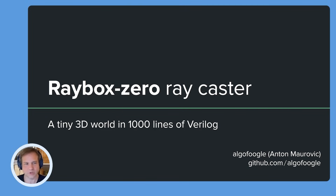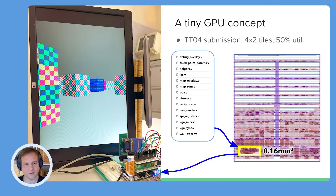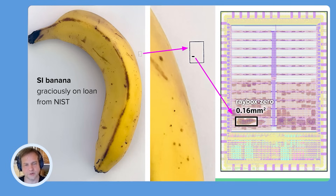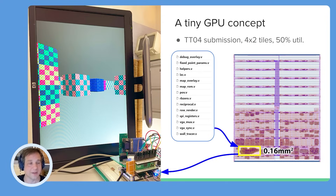I've got to give a talk on my design Raybox Zero, which is one that I did after completing the Zero to ASIC course. It's a Raycaster GPU design that is just a really simple concept — a tiny GPU, which you can see running on the left in an FPGA. I submitted it to Tiny Tapeout, and it took four by two tiles, but only about 50% utilization. Its purpose is to produce a VGA display that is an illusion of being inside a 3D world using a concept known as ray casting, which is effectively a 2D version of ray tracing done in a very simple way using a grid-based world. It effectively uses the same concept as the old video game Wolfenstein 3D from 1992, which is quite simple in concept and good for a limited hardware design.